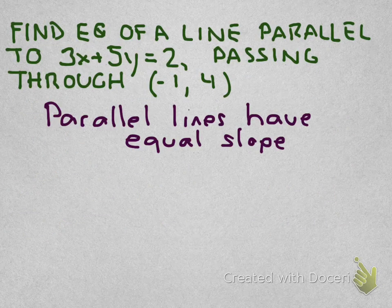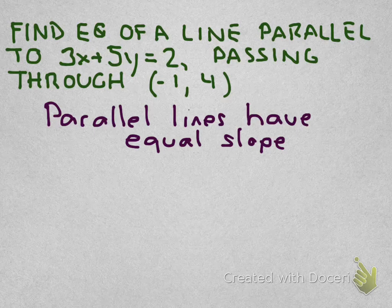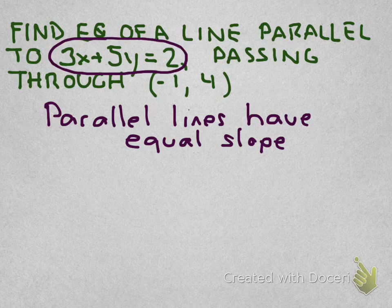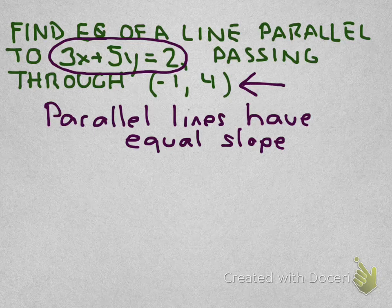So how can you use that in problems dealing with parallel and perpendiculars? We have: find the equation of a line parallel to 3x + 5y = 2, and we want it to pass through this point, negative 1, 4. And what we need to do with these problems is use the rule that parallel lines have equal slope. We know that from the past.